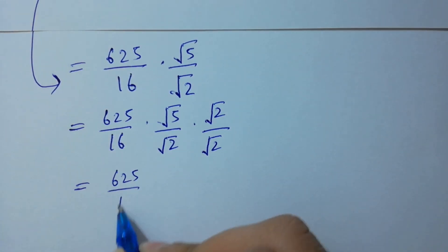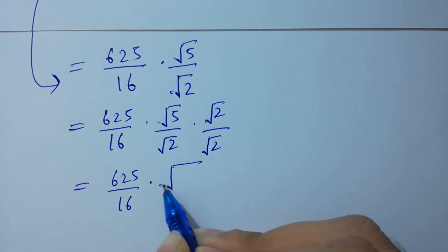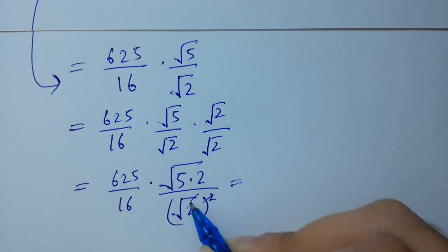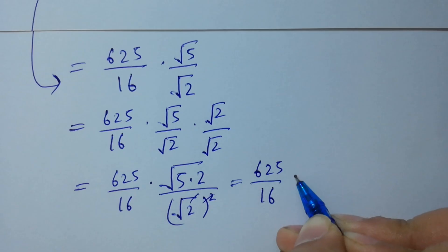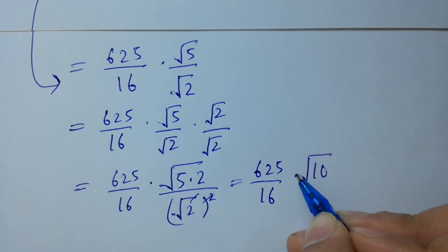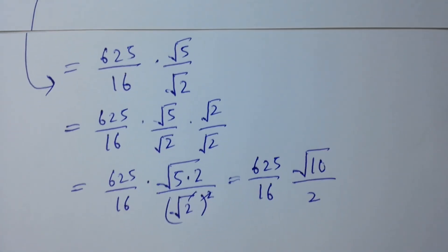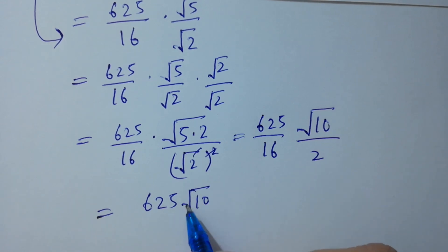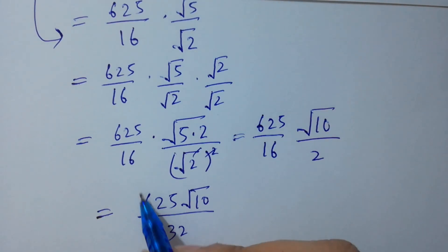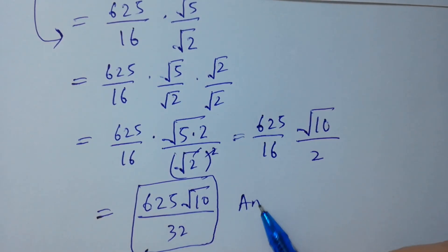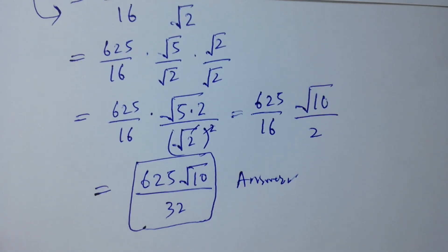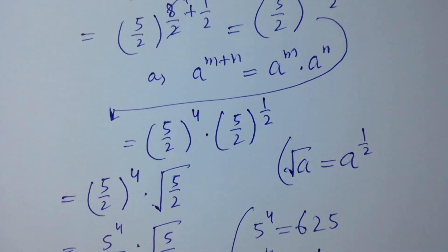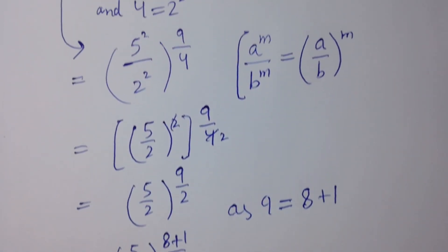The square roots of 2 cancel, giving us 625 over 16 times square root of 10 over 2, so our final answer is 625 times square root of 10 over 32. Thanks for watching this video — please subscribe to the channel to get notifications of new videos, and don't forget to share with your classmates and friends so they can benefit too. Bye!